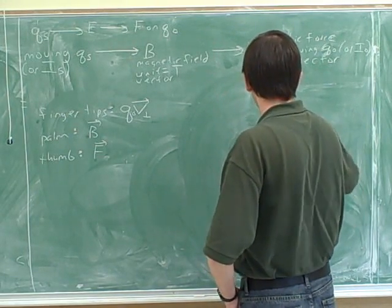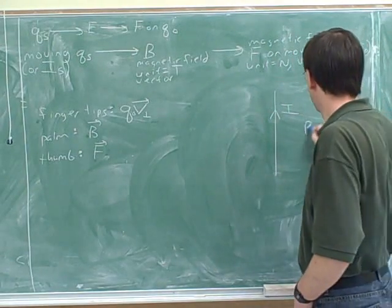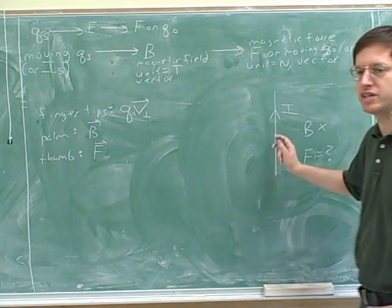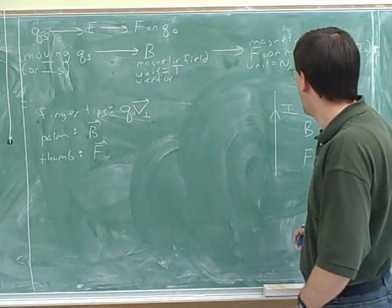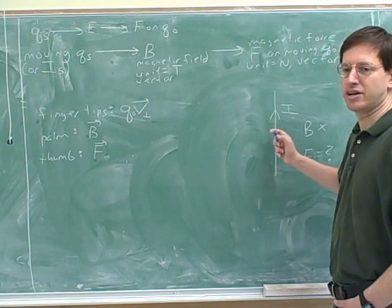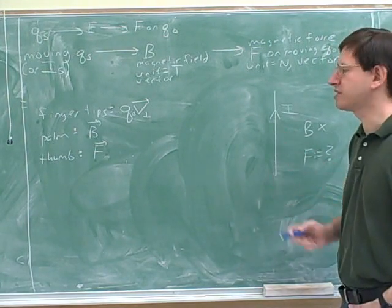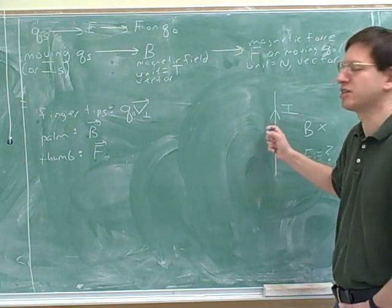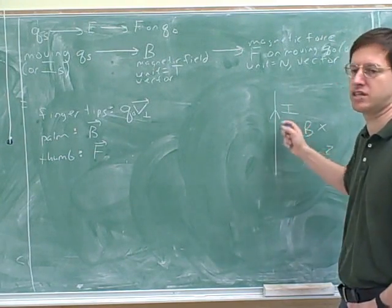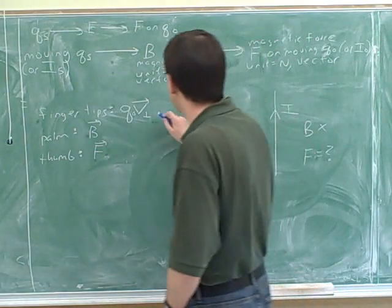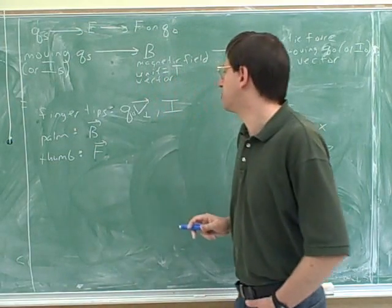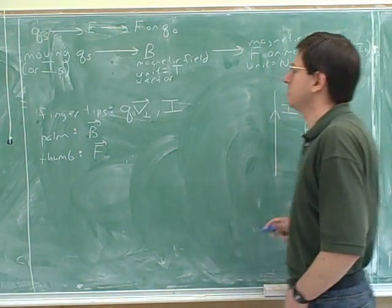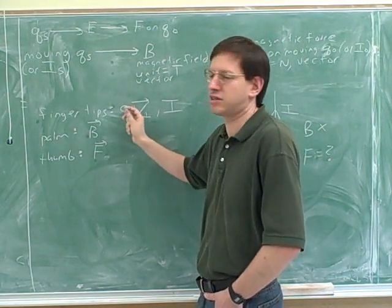For example, we might have a current-carrying wire in a magnetic field, and we want to figure out what the force is on this wire from the field. Which way would you say the charges are moving, and do we consider them to be positive or negative? Positive — regardless of what the actual moving charge is, the conventional current represents positive charges. That means the direction of Q times V is the same as the direction of the current. So when dealing with a current, you can just point your fingertips in the direction of the current — you don't need to bother with the QV business.